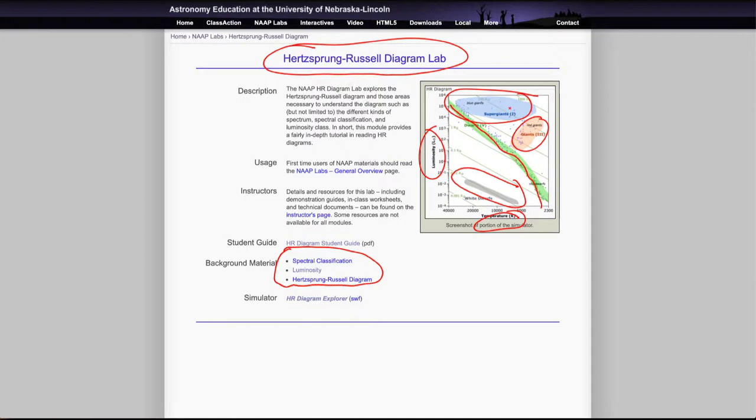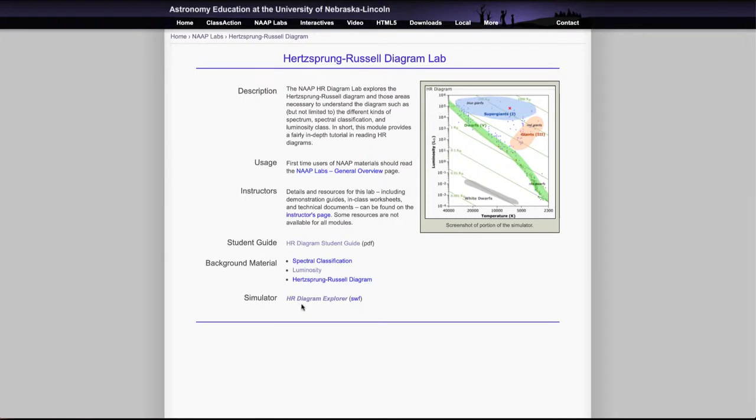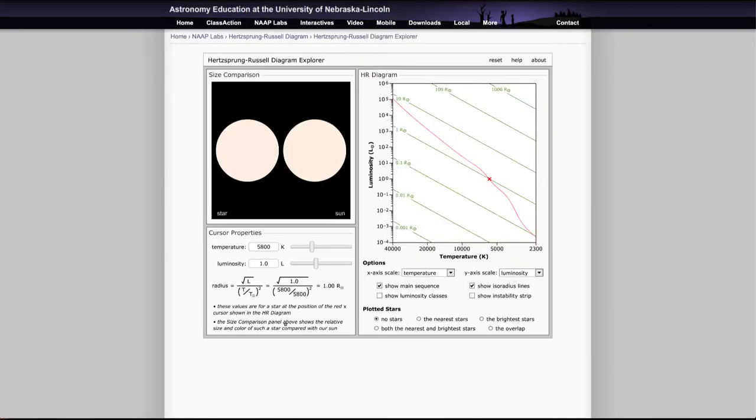Let's go ahead and take a look at the simulator. When we open the simulator we'll find there are a number of different boxes here. We're looking at sizes of stars compared to the Sun, so the star will be here and our Sun will be here for reference.